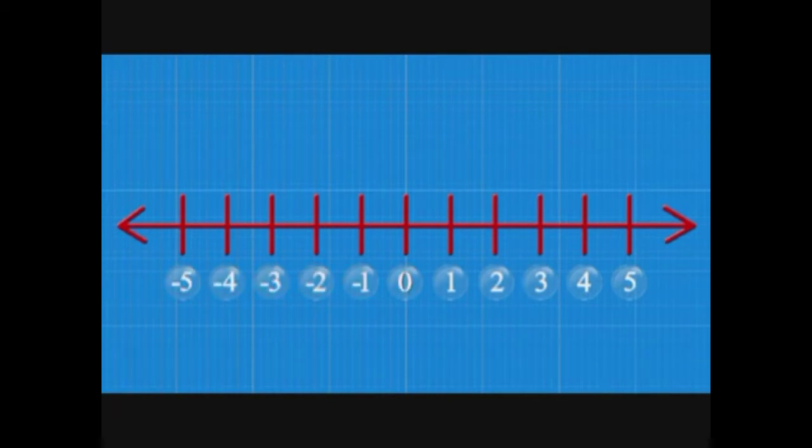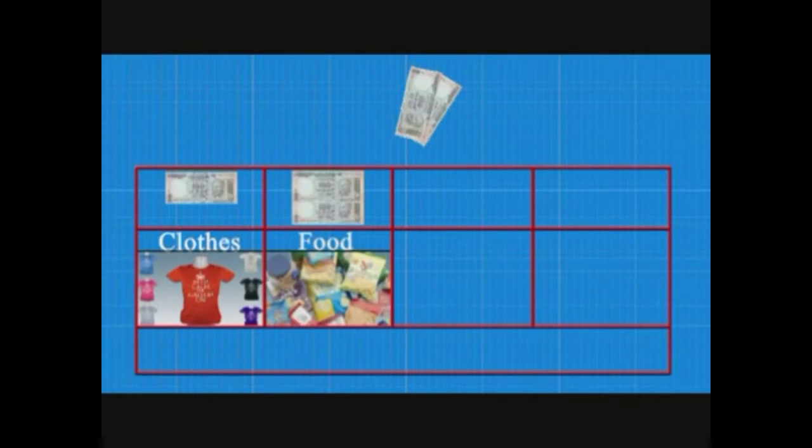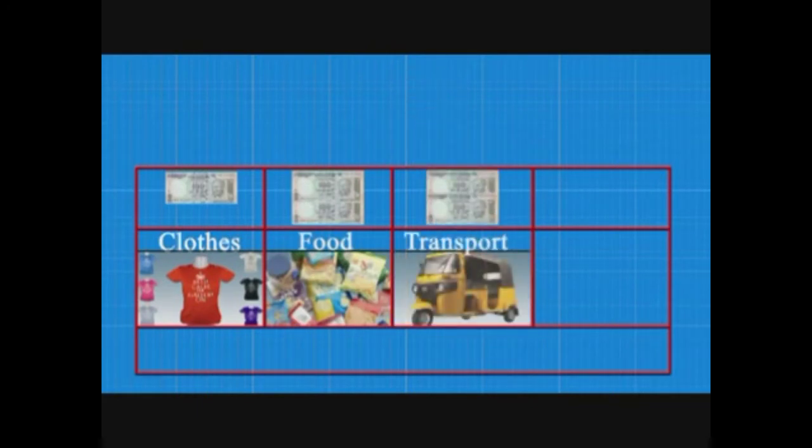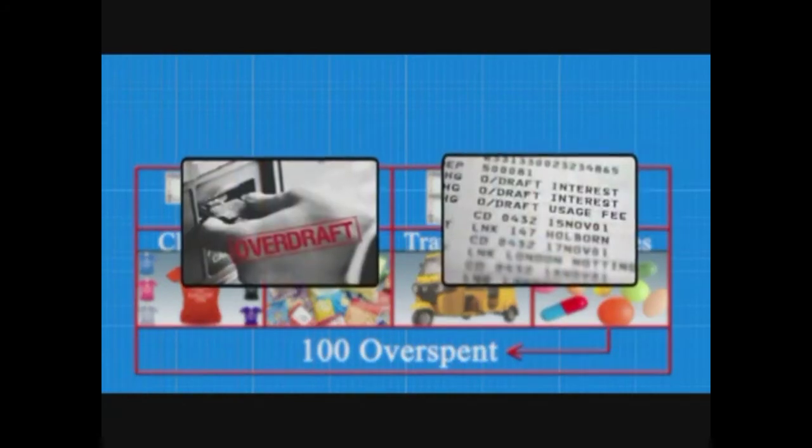Let's look at it in terms of money. I have 500 rupees. I spend 100 on clothes, 200 on food, 200 on transport, and another 100 for medicines. Oops, I seem to have overspent, right? My bank would call this an overdraft. In mathematics, we call this a negative number.